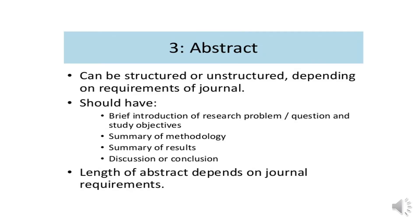Then you go to the abstract. An abstract can be structured or unstructured depending on requirements of the journal. It should have a brief introduction of the research problem or question and study objectives, a summary of the methodology, summary of results, and discussion or conclusion. The length of the abstract normally depends on the journal requirements.